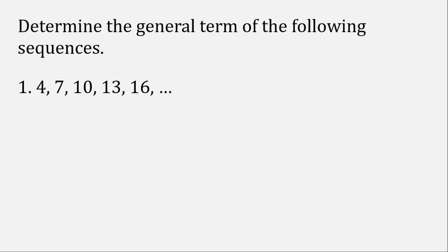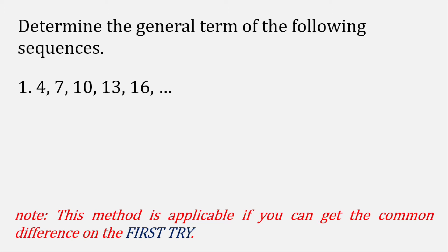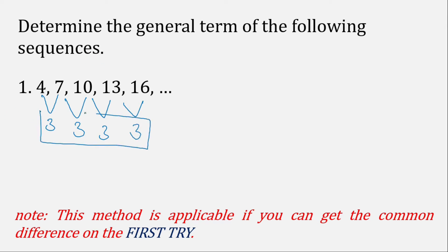Let's start with number one. The very first thing you do in answering this kind of question is see if there is a common difference between the terms. Let's check: 7 minus 4 is 3, 10 minus 7 is 3, 13 minus 10 is 3, and 16 minus 13 is 3. So we get a common difference on the first try.